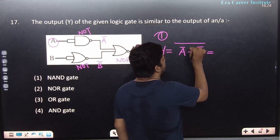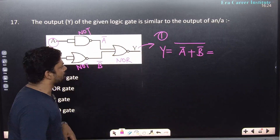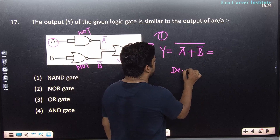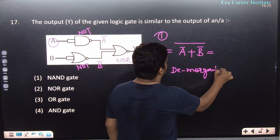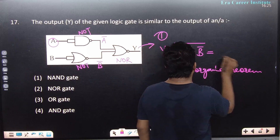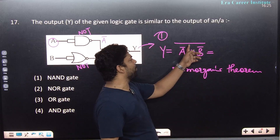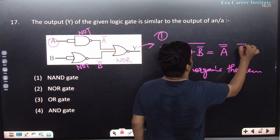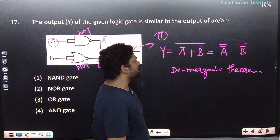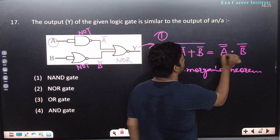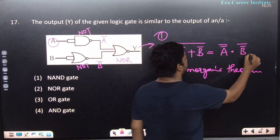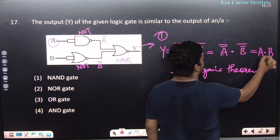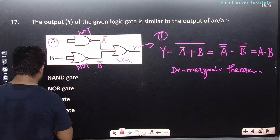Applying De Morgan's theorem: (Ā + B̄)̄. Breaking the complement over the sum changes + to ·, and double bars cancel: Ā̄·B̄̄ = A·B. So the output Y = A·B, which is an AND gate. De Morgan's theorem states that the complement of a sum equals the product of the complements.